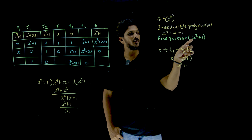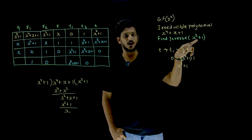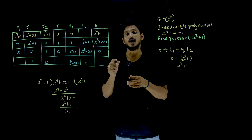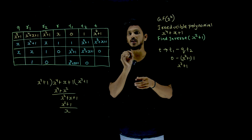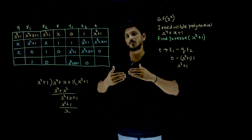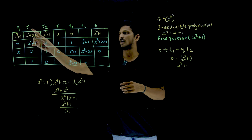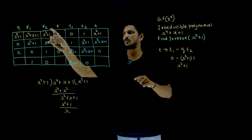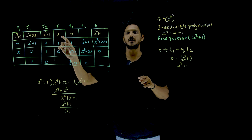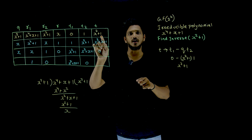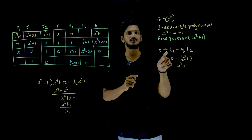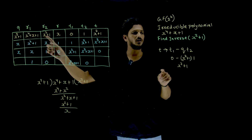If you want to find the inverse of the element x^2 + 1, we go with the Euclidean algorithm method. In the Euclidean algorithm, s values will be there — s1, s2 — and t values will be there — t1, t2. We do a division operation and based on the remainder, until you get 0, we continue the division. r1 is considered as the irreducible polynomial and r2 is considered as our element. Initially, t1 is considered as 0 and t2 is considered as 1. The equation to find t is: t = t1 − q * t2, where q means the quotient.